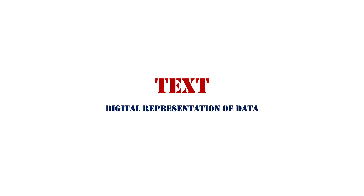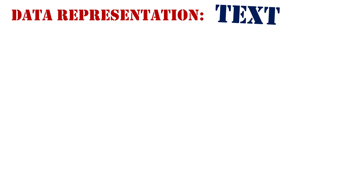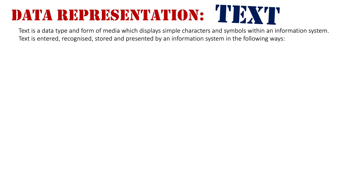Digital representation of data: Text. We are going to take a look at text today. Essentially text is a data type and form of media which displays simple characters and symbols within an information system. Really that's all text is — it's symbols and there's not much more behind it.